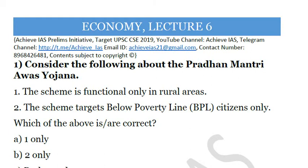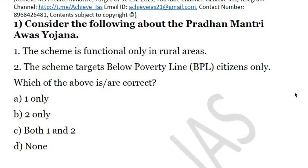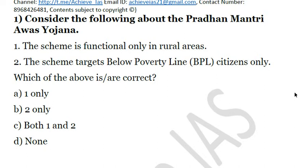Let's start our discussion. The first question is: consider the following about the Pradhan Mantri Avas Yojana. First, the scheme is functional only in rural areas. Second, the scheme targets below poverty line citizens only. We have to choose the correct statement. Let me tell you friends that both of these are wrong. So the answer would be D, that is none.